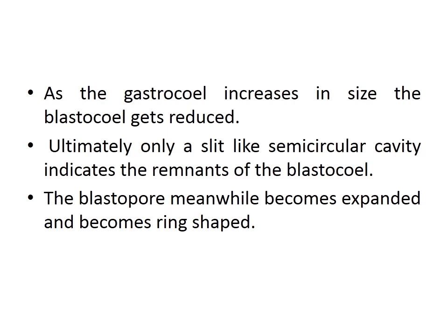As the archenteron increases in size, the blastocoel gets reduced until only a slit-like semicircular cavity remains as its remnant. The blastopore becomes expanded and ring-shaped. To differentiate blastula from gastrula: the blastula has a blastocoel plus blastodermal cells, while the gastrula has two cavities — a slit-like blastocoel and a larger archenteron.